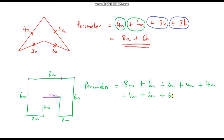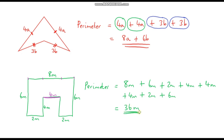That is our expression, and we can simplify it since these are all m terms. Adding them all together: 8 plus 6 plus 2 plus 4 plus 4 plus 2 plus 6 gives us 36m. So our expression for the perimeter is 36m.